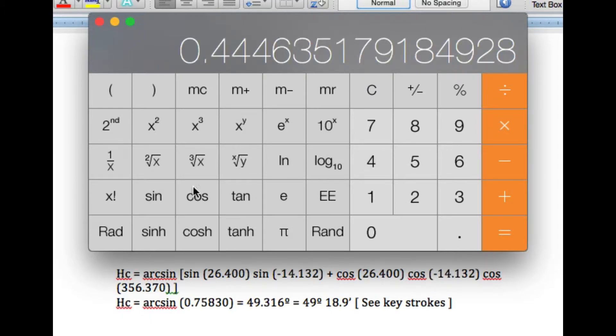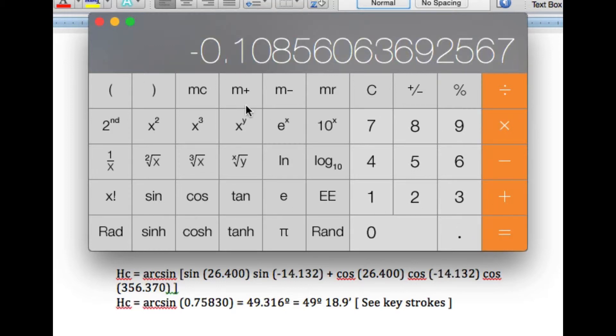And then next is times. Times is going to be times the sine of this, so that's 14.132, change the sign, take the sine of that, and then equals. That's times that.